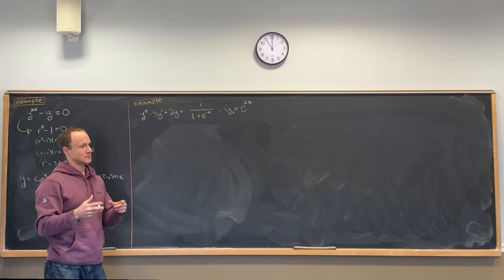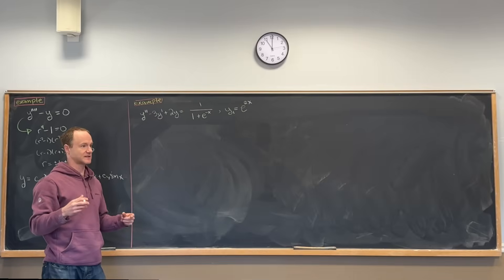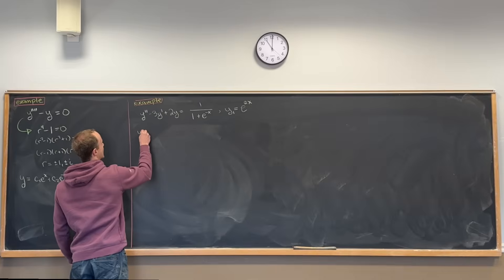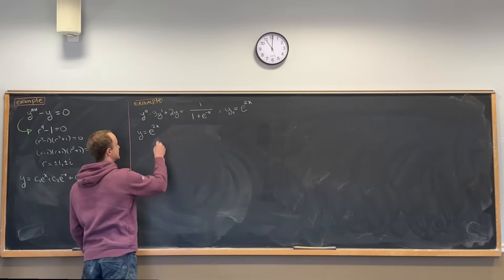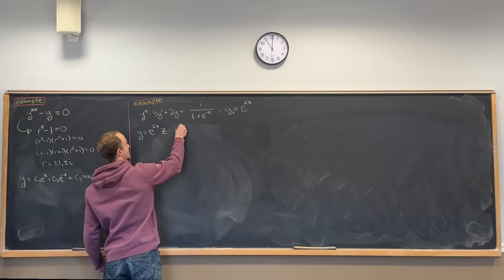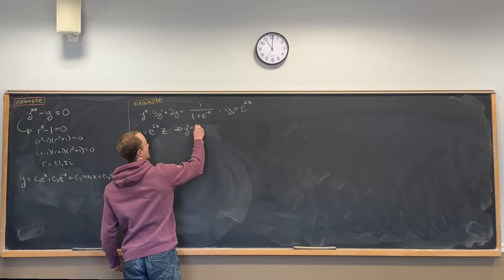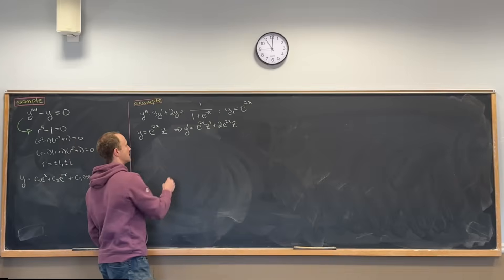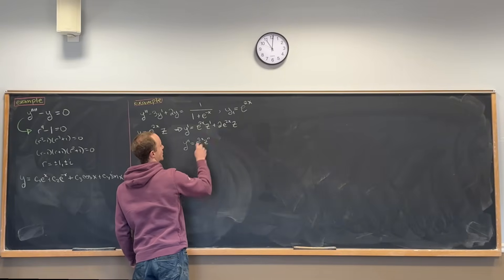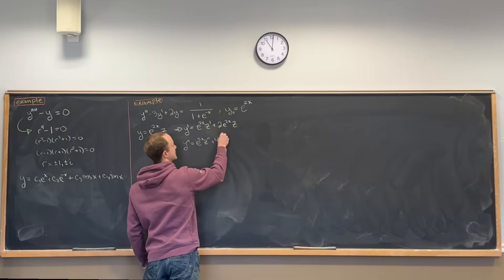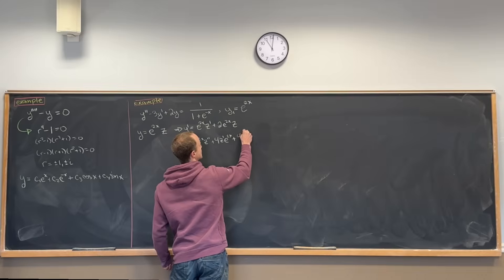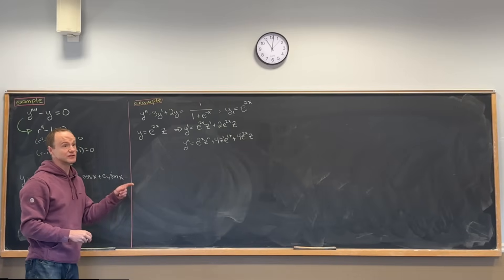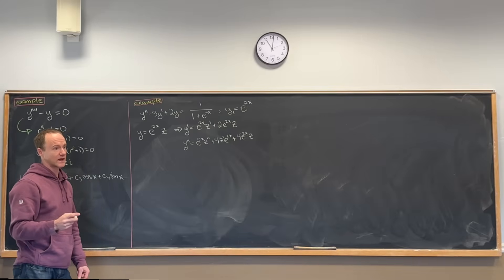We'll build off of this — the standard reduction of order trick. We'll set y equal to e to the 2x times z. That's a good choice. Then the derivative is e to the 2x times z prime plus 2e to the 2x times z by the product rule. Applying the product rule again gives y double prime equals e to the 2x times z double prime plus 4z prime e to the 2x plus 4e to the 2x times z.